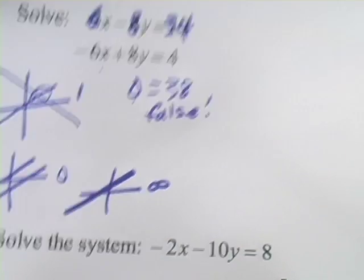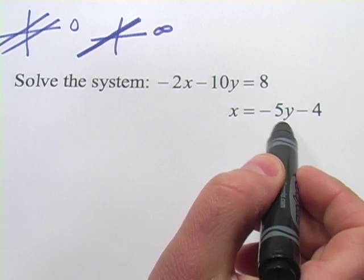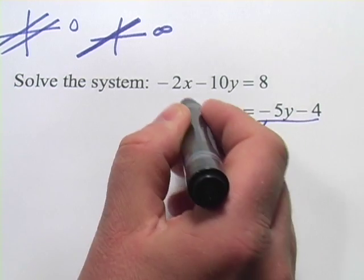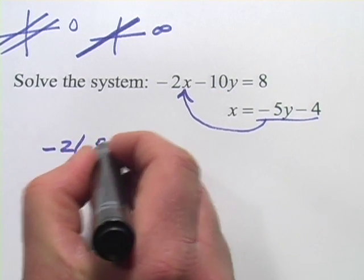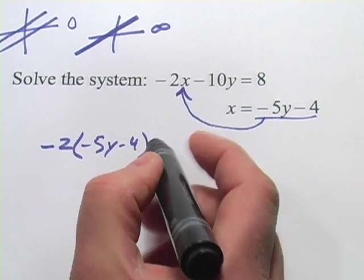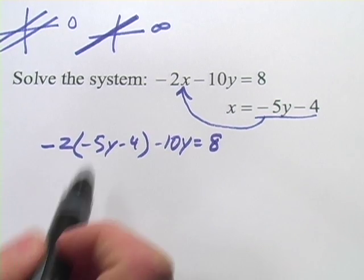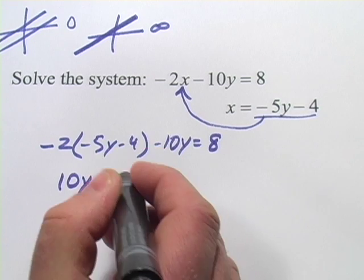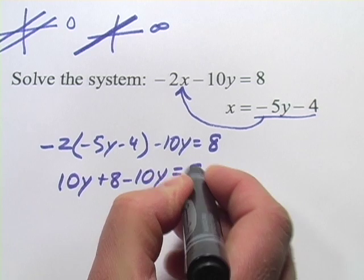Let's look at one more. This system is set up in such a way that it invites you to try the substitution method, so we'll go ahead and do that. This one is solved for x, so we'll plug that in for x here. So we get negative 2 times x, which now is negative 5y minus 4, and then we go on with the rest of the equation: minus 10y equals 8. Let's go ahead and multiply the negative 2 through. Negative 2 times negative 5y is positive 10y, and negative 2 times negative 4 is positive 8. Then we've got minus 10y equals 8.